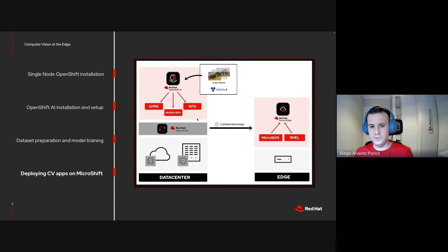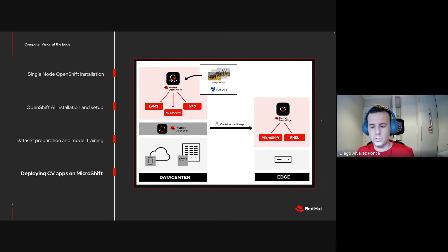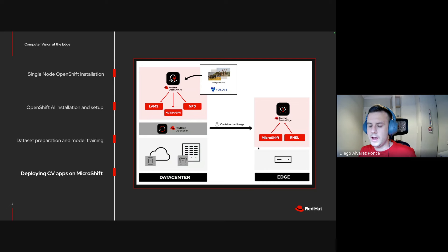For today, we are going to take that model and embed it into a containerized image, push that image into our registry, and then start setting up the edge device. For the edge device there are two different approaches: one using OpenShift Virtualization, or a virtual machine outside the single node. I'll show you both approaches. We are going to install Red Hat Enterprise Linux 9.4 and on top of it install MicroShift.